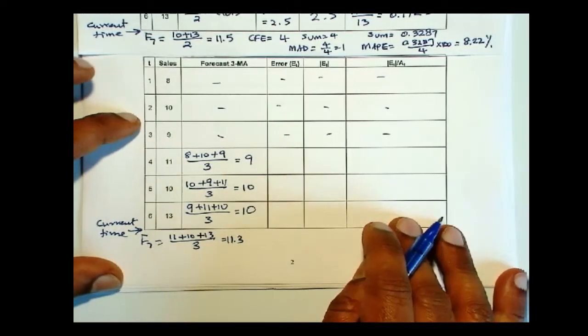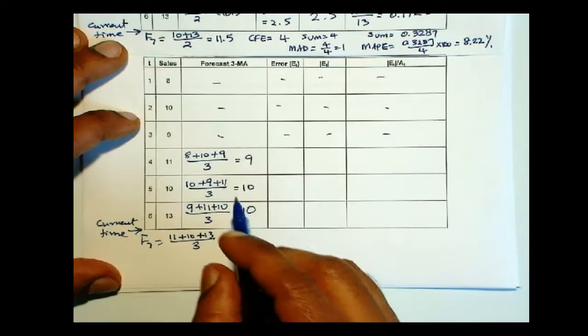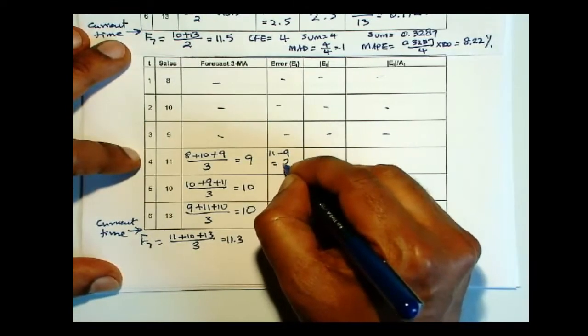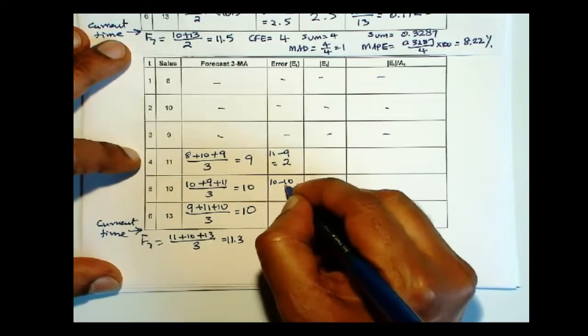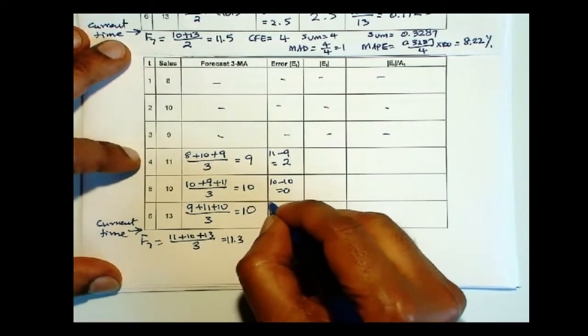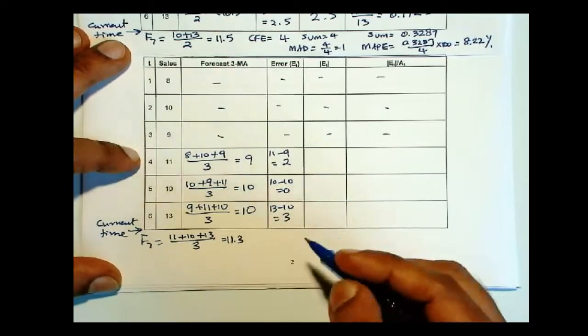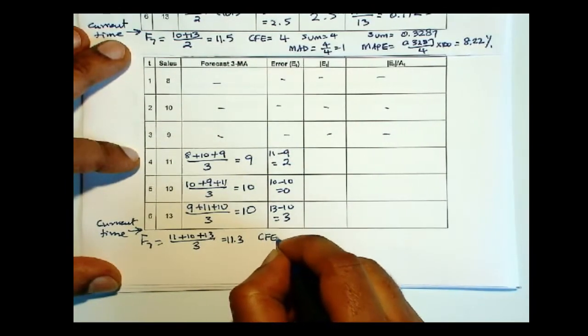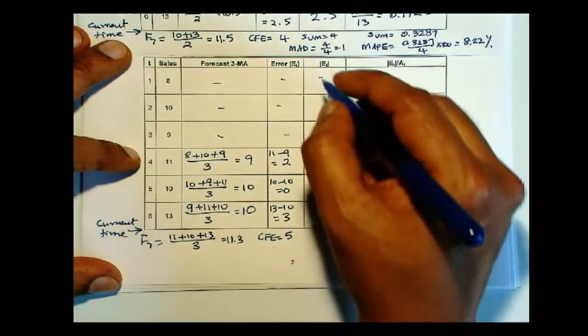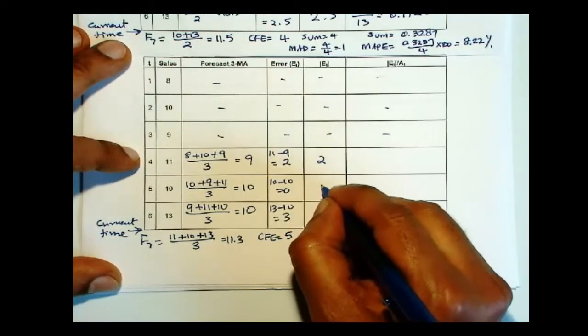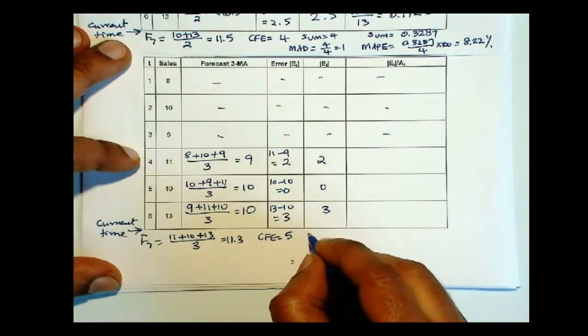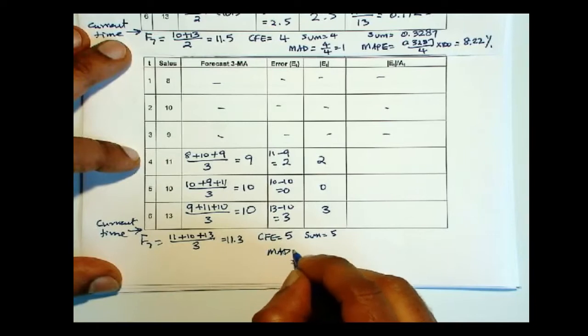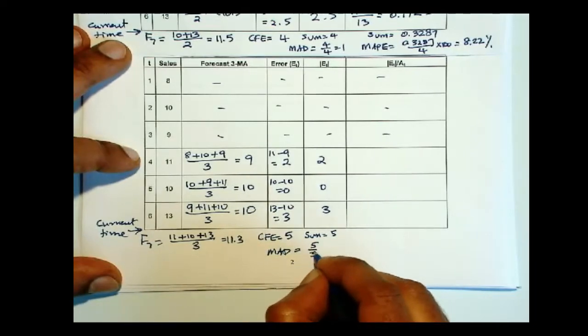Now if you compute the forecast errors, 11 minus 9 is 2, 10 minus 10 is 0, 13 minus 10 is 3. Now this sum will give you cumulative forecast error, which is 5. The absolute error is 2, 0, and 3. And this sum is 5. So MAD is 5 over 3 is 1.67.